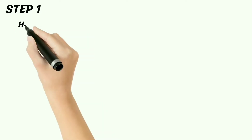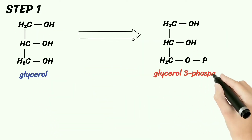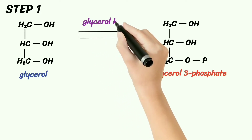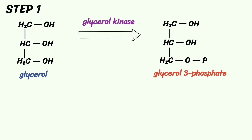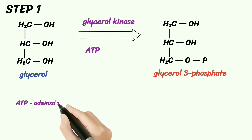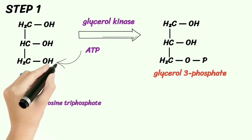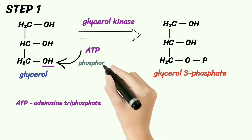The first step of glycerol metabolism involves the conversion of glycerol to glycerol-3-phosphate. This is made possible by the enzyme glycerol kinase. In step 1, one ATP molecule, or adenosine triphosphate, is added to a primary hydroxyl group of glycerol. This process is called phosphorylation.